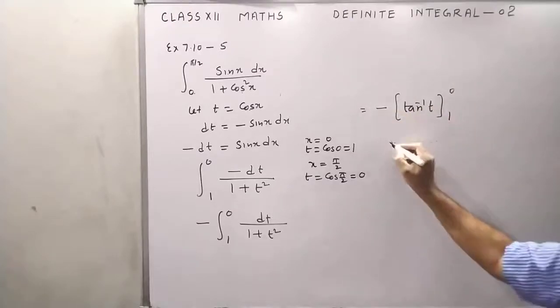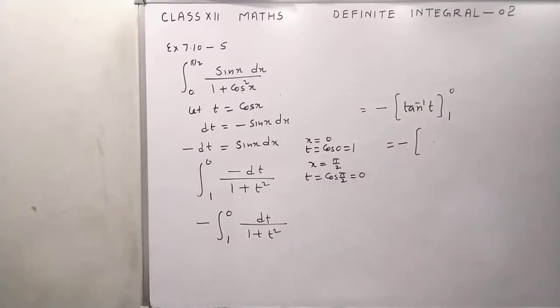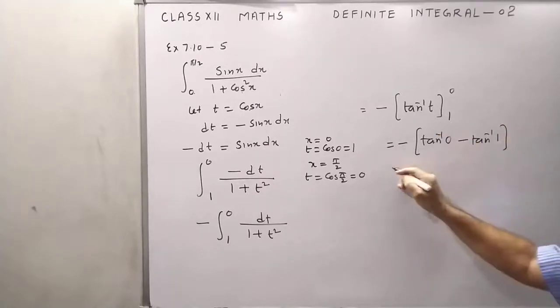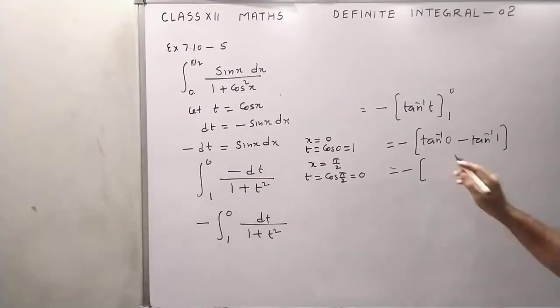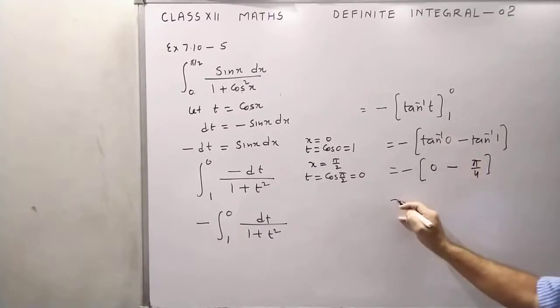So we will get minus, first substitute t equals 0, so we have tan inverse 0 minus tan inverse of the lower limit, that is 1. We know tan 0 is 0, therefore tan inverse 0 is equal to 0, and tan theta equals 1, then theta will be pi by 4.